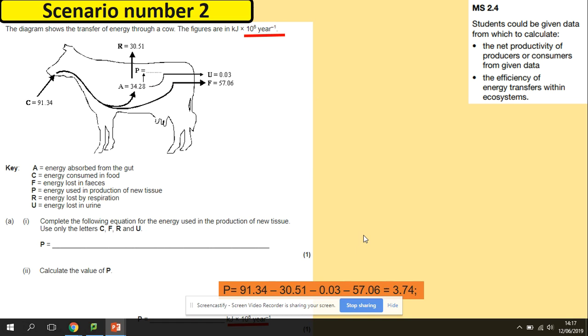Another question here, you could calculate the value of P. First, you need to work out P as the equation, so what's missing here. How can we work it out? We need to take away every loss that we've got here because we need to complete the equation for the energy used in the production of new tissues. So anything that was taken away, so C, energy consumed in food, R which was respiration, U which was urine, and F which was faeces, that's gone. What's left is your P.